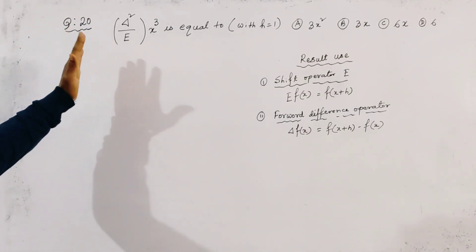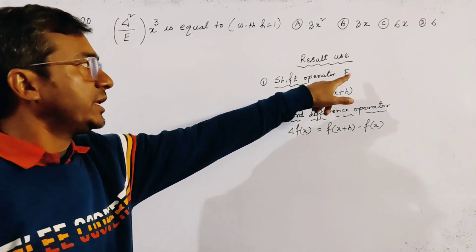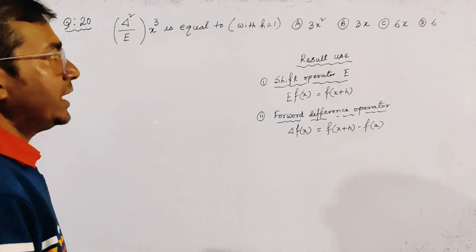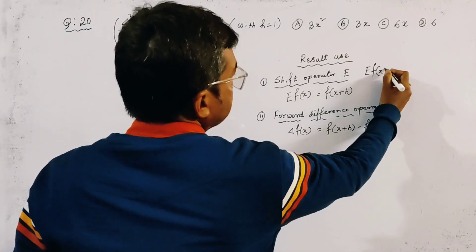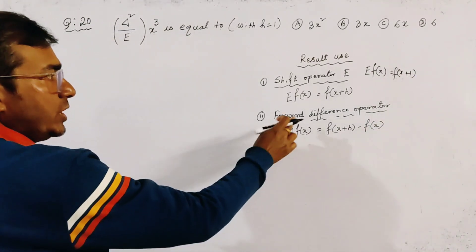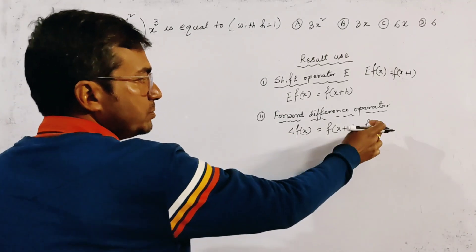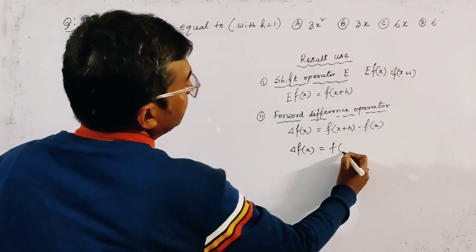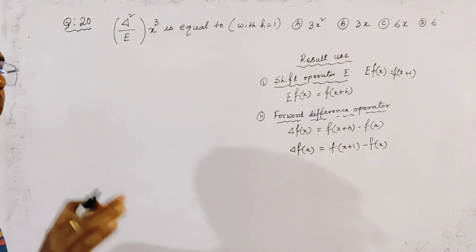To solve this problem we use two operator definitions. The first is the shift operator E, where E of f(x) equals f(x+h). Since h equals 1, E of f(x) equals f(x+1). The forward difference operator delta is defined as Δf(x) equals f(x+h) minus f(x), so with h=1, Δf(x) equals f(x+1) minus f(x).